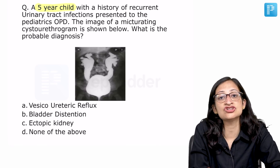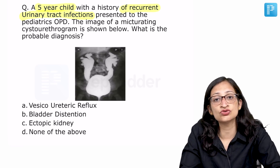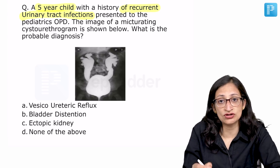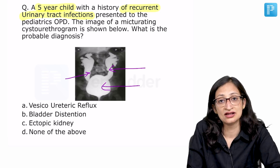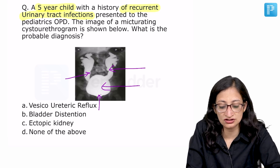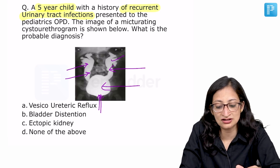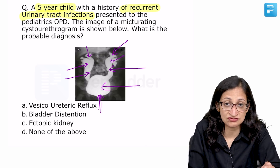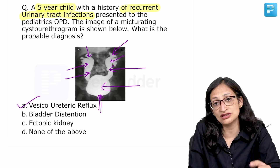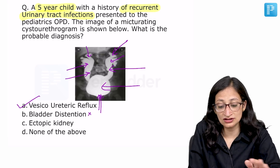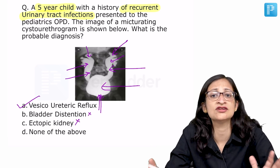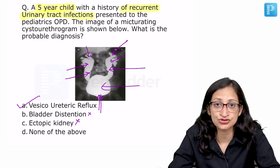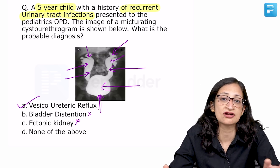Moving on to the next question: a five-year-old with a history of recurrent urinary infections was evaluated and an image of a micturating cystourethrogram is shown. What you see is a dilated bladder, bilaterally dilated ureters, dilated renal pelvis and calyces — bilateral findings. This is suggestive of bilateral vesicoureteric reflux. Micturating cystourethrogram is done to look for posterior urethral valve or VUR, which is a very common cause of recurrent urinary tract infections in children.